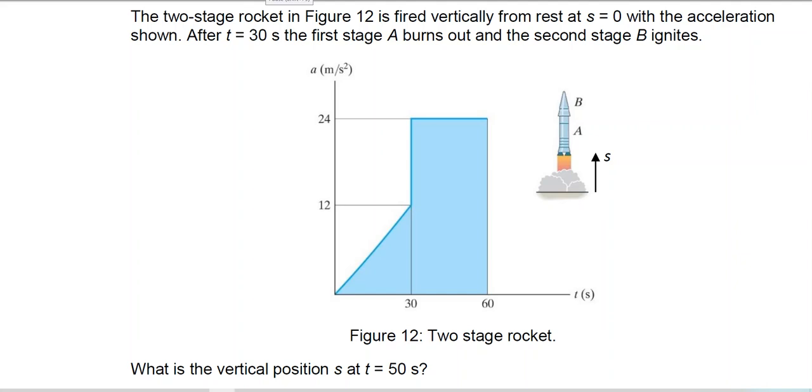Hi everyone. The two-stage rocket in this figure is fired vertically from rest at position 0 with the acceleration shown. After 30 seconds the first stage A burns out and the second stage B ignites. What is the vertical position S at t equals 50 seconds?